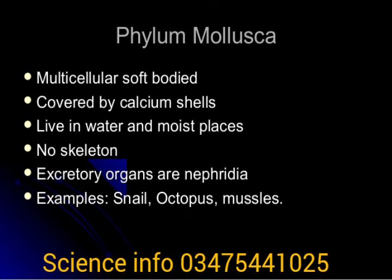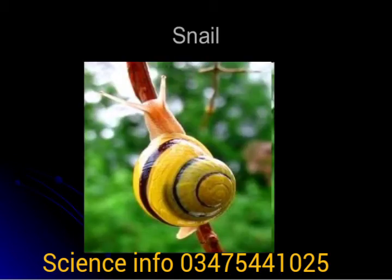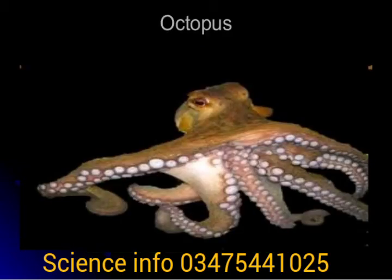Mollusks are triploblastic, unsegmented, and have a soft body. The body is divided into head, foot, and visceral mass. The mantle secretes the shell. Mollusks have gills and a rasping tongue-like radula with horny teeth. The body has complex digestive, respiratory, circulatory, nervous, and reproductive systems. They include three classes: Gastropoda (land snails and slugs), Cephalopoda (octopus), and Bivalvia (mussels).